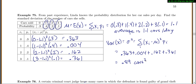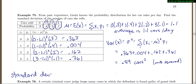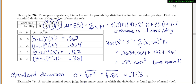It doesn't really make sense to have your starting units squared — dollar squared or cars squared doesn't make sense — and that's one reason they came up with standard deviation. Standard deviation is sigma, or just the square root of sigma squared. The square root of 0.89 is 0.943, and the square root of cars squared gives you back to cars — a unit that actually makes sense. So the final standard deviation is 0.943 cars.